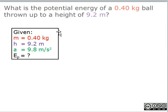From the problem, we are given mass equals 0.4 kilograms, which is shown in red, and the height is 9.2 meters, which is shown in purple. We know that the acceleration is 9.8 meters per second squared, which is shown in green, and we are looking for the potential energy.